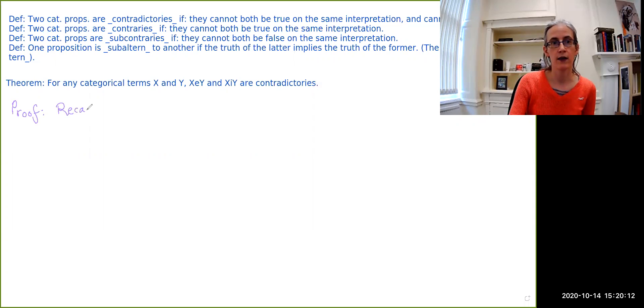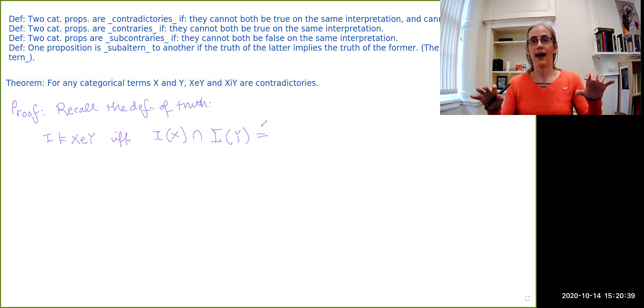Here is our proof. I'm going to start off by saying, recall the definition of truth. We know that some interpretation i makes x e y true if and only if, if you take everything that's in x and you look at everything that's in y and ask yourself, is there anything that is in both of these? So that's what the intersection symbol right here stands for. If the answer is there is nothing that is in both the interpretation of x and the interpretation of y.